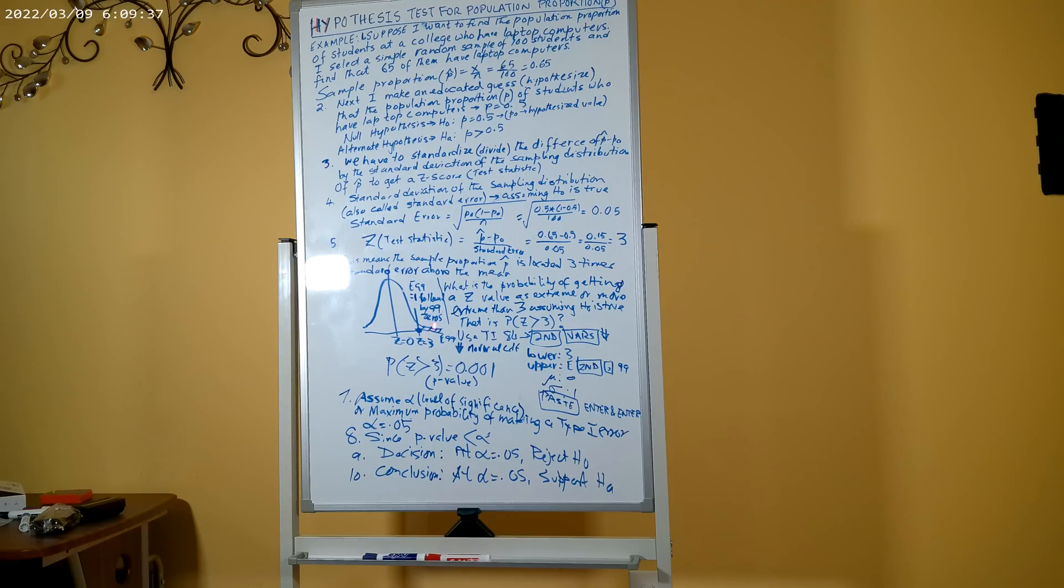My upper boundary is a very large number on the right-hand side, which we indicate by E99, that means 1 followed by 99 zeros. How do I get the E in the calculator? Press the second button and then comma, which is on top of number 7, and then type 99. E99. Mu is 0 because the standard normal curve, sigma is 1. Then I scroll down to paste and then hit enter and enter, and I will get the probability value of z greater than 3 as 0.001.